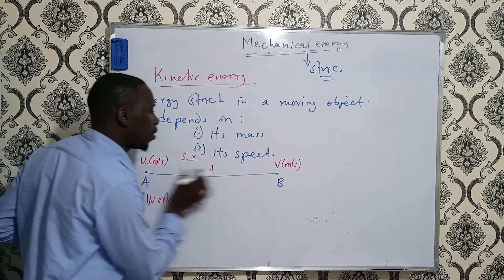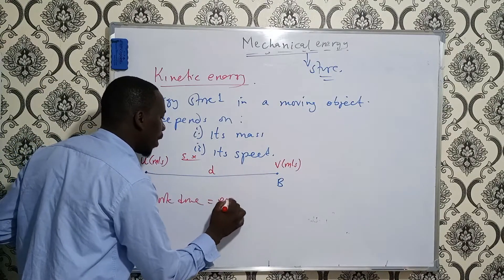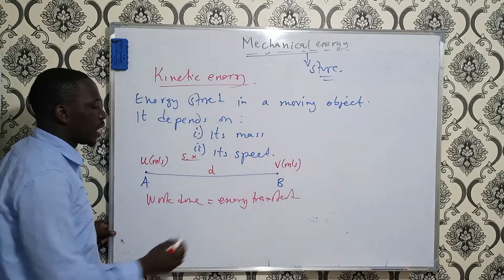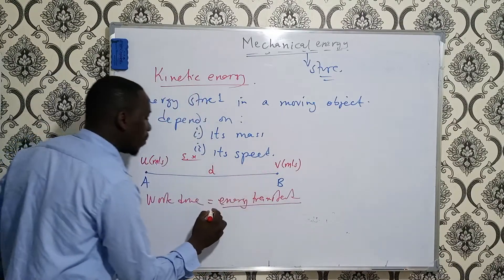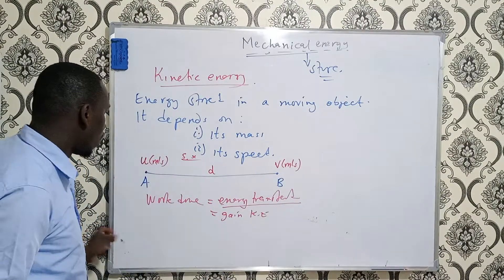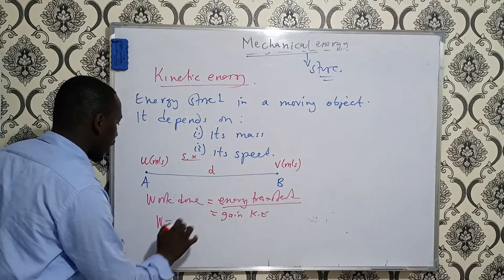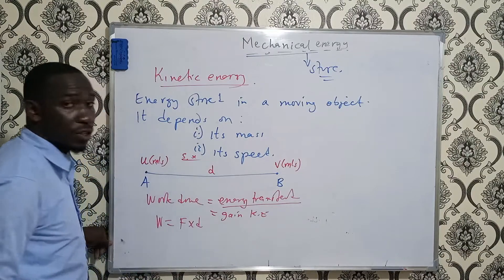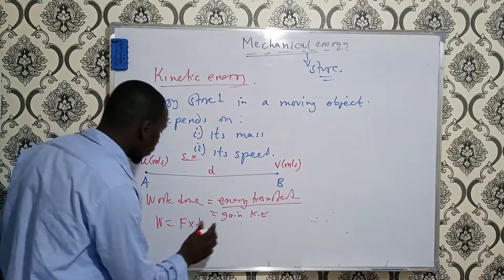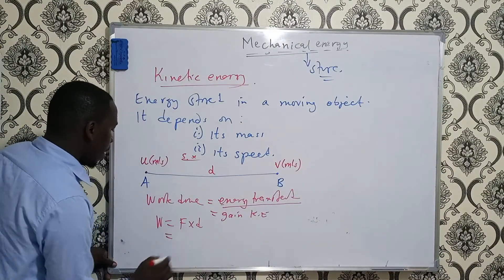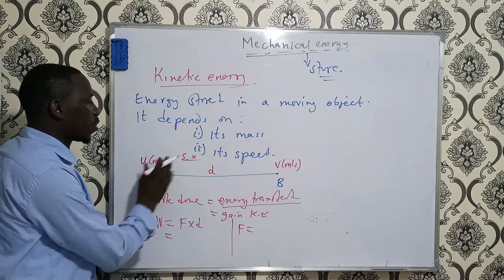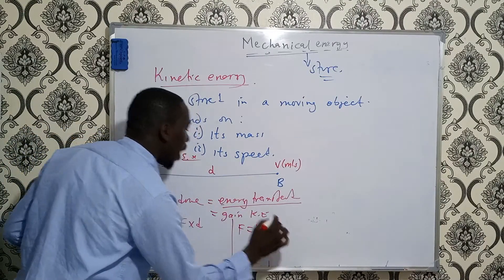The work done in moving the object from point A to point B is equal to the energy transferred to the object. Since the speed is increasing, there will be a gain in kinetic energy. Work is defined as force multiplied by distance in the direction of force. From here, the resultant force F that moves the object from A to B is given by mass times acceleration: F = ma.